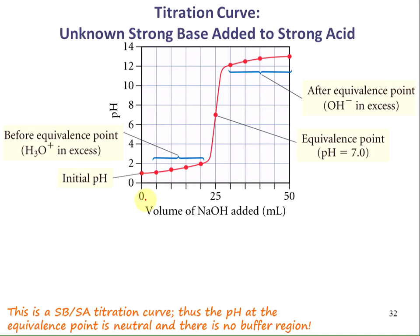At volume zero, where no sodium hydroxide has been added, this is the initial pH of the solution. Now as we start adding sodium hydroxide, the sodium hydroxide is neutralizing the strong acid. But there is an excess of the strong acid, so the solution is still acidic.